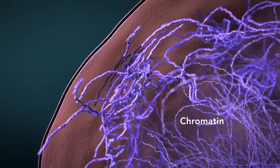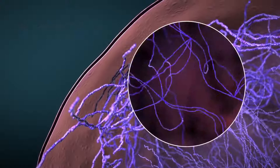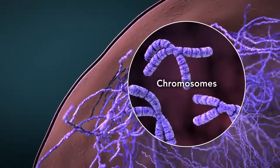Chromatin is the tangled spread-out form of DNA found inside the nuclear membrane. When a cell is ready to divide, DNA condenses into structures known as chromosomes.